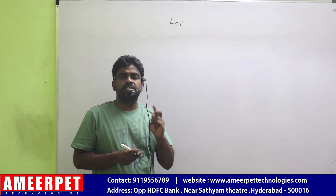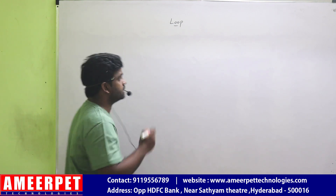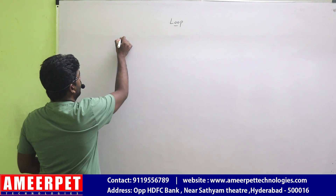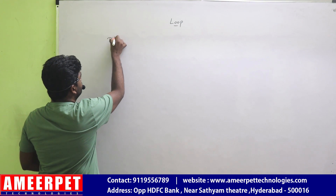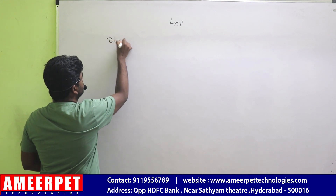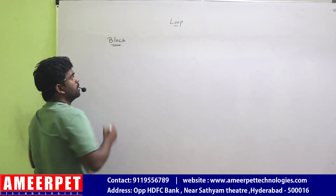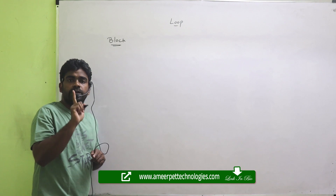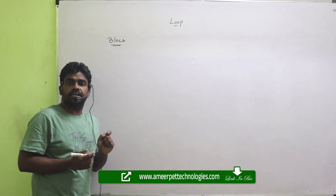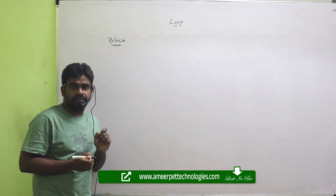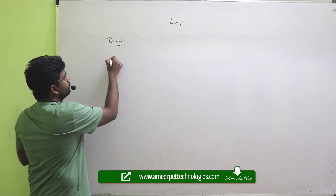What is the difference between a block and a loop? Suppose you consider a block — a block executes only one time if the condition is valid. Let me explain with a flow.